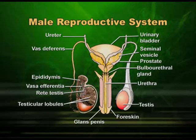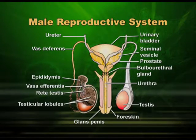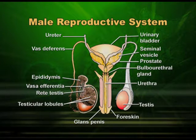Going back to the vas efferens — vas efferens will come out from the testes through rete testis and will continue as, or end on, the epididymis. You can see in this diagram on the left side the epididymis. Epididymis has three parts: cauda, caput, and corpus. It does the work of storing the sperms, and now from the epididymis begins the vas deferens. Please remember all this is happening in the scrotum — we are still outside the abdominal cavity.